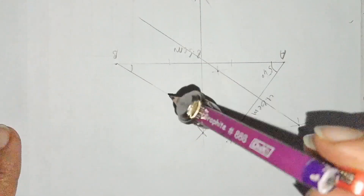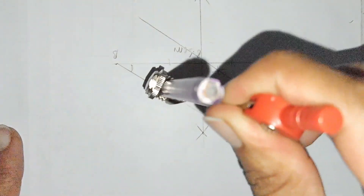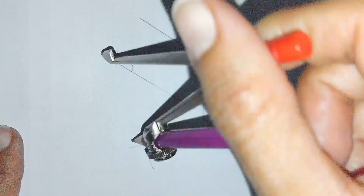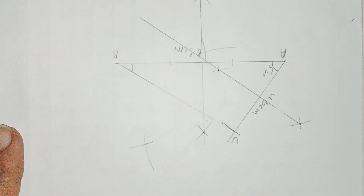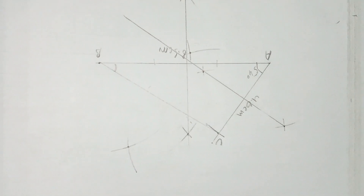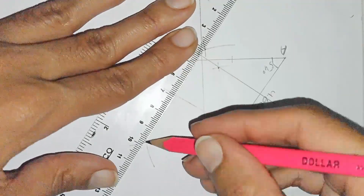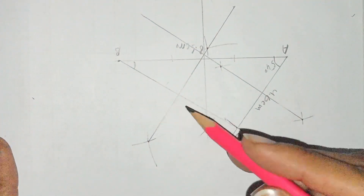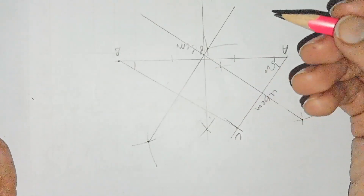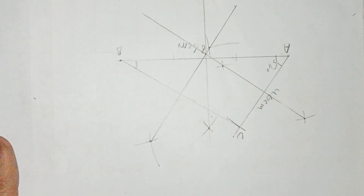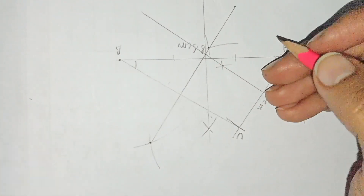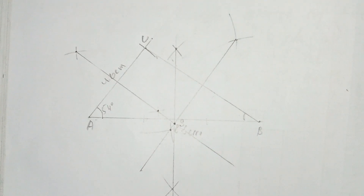Now I make the perpendicular bisector of BC: open the compass more than half, draw an arc, and join where it cuts. All three bisectors meet at a single point — this is point S, which is equidistant from A, B and C. Point S lies on all three perpendicular bisectors, so we label it S.